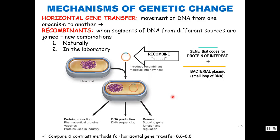Horizontal gene transfer is how bacteria recombine and move DNA amongst members of the same generation — not parent to daughter cells. What we end up with are recombinants: segments of DNA from different sources joined to create new combinations. This can occur naturally or in the laboratory. In the lab, a gene of interest can be inserted into a bacterial plasmid and introduced through transformation, then bacteria are used to produce that gene product — useful for pharmaceutical proteins, vaccines, vitamins, interleukins for research, and DNA probes or sequencing.